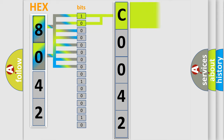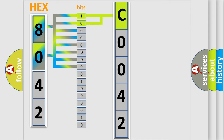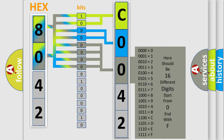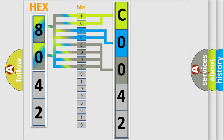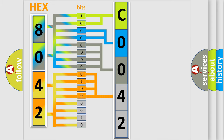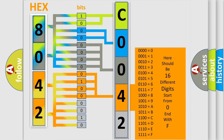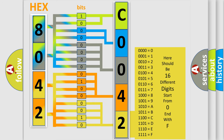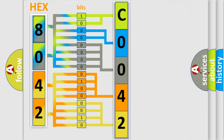By combining the first two bits, the basic character of the error code is expressed. The next two bits determine the second character. The last bit styles of the first byte define the third character of the code. The second byte is composed of a combination of eight bits. The first four bits determine the fourth character, and the combination of the last four bits defines the fifth character. A single byte conceals 256 possible combinations.